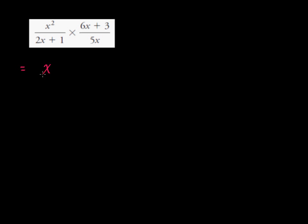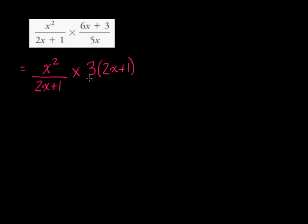In the first rational expression here, I've got x squared in the numerator and the denominator 2x plus 1. Each of those pieces by themselves is already in factored form. We multiply by, and we can take out a common factor here of 3, so 3 times 2x plus 1 is what's left, over 5x. So each piece now is in factored form. The only piece that we actually had to factor was the numerator of the second rational expression.